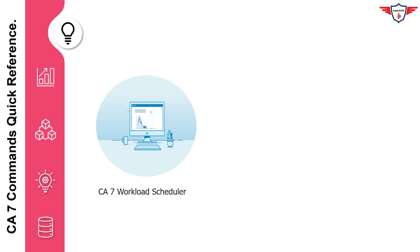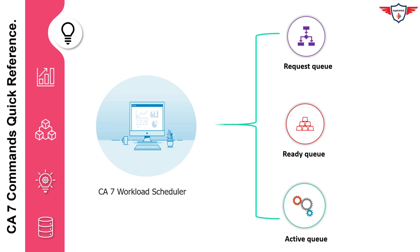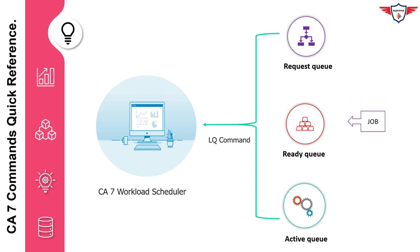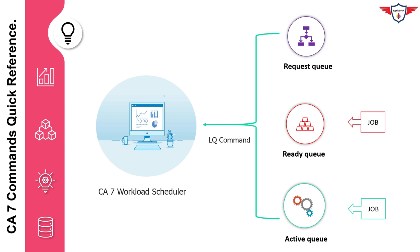We will primarily focus on the request queue, ready queue, and active queue. Whenever CA7 schedules a job for processing, it places that job in the request queue, where jobs wait until all requirements are satisfied. When all requirements are satisfied, they move to the ready queue, from where they are submitted to the computer for execution. When they start running, they move to the active queue. No job will be submitted until all its requirements have been satisfied, either manually or automatically.